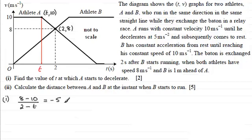So it's just a question of solving this equation. So if I multiply both sides by 2 minus t, we've got 8 minus 10, which is going to be minus 2, is going to equal minus 5, multiplied by all of 2 minus t.